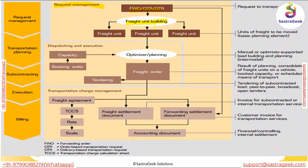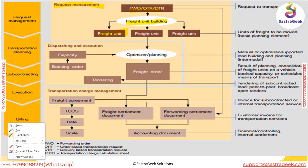We'll cover the Freight Unit Building Rule maybe tomorrow or next week as we start the order management part of TM. With the help of the FUBR, we create a freight unit in the system. This freight unit basically triggers the transportation planning requirement for the optimizer engine, bringing us to the second block — dispatching and transportation planning and execution.